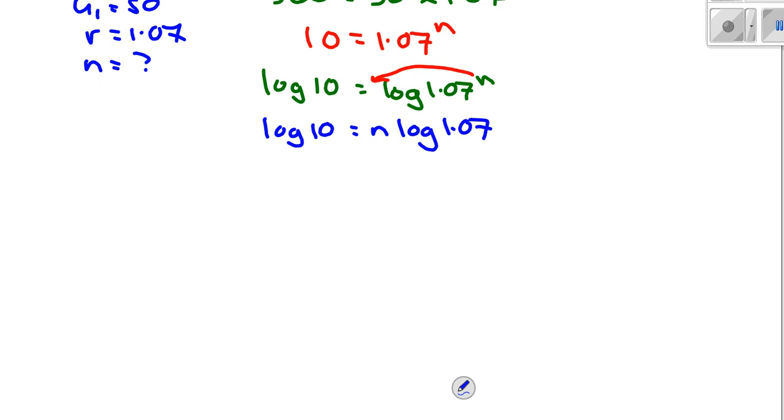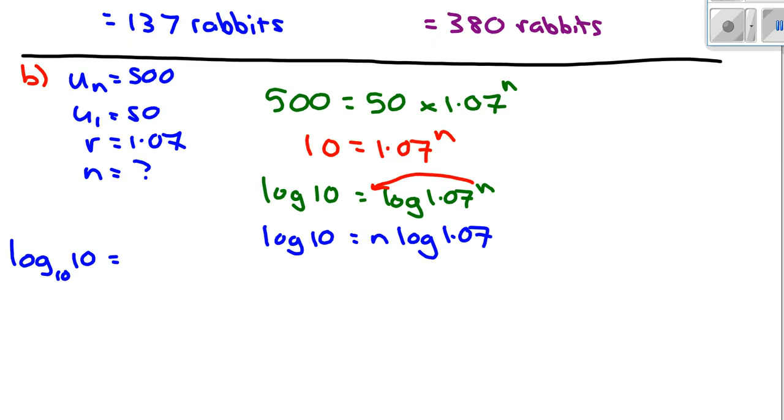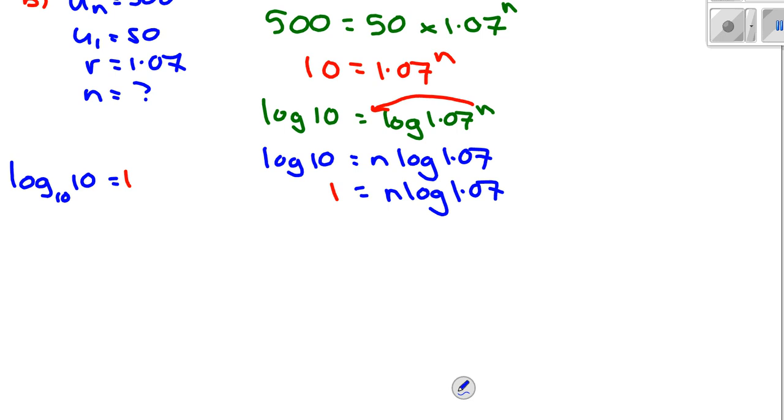So log 10 equals log 1.07 to the n. Some people like to go straight to doing this, you're welcome to do that. You can go straight to log 10 equals n log 1.07. What is log 10? 1, yeah, log 10 is 1, isn't it? Because the regular base of the log is 10. Then 10 to the power of what equals 10? It's 1. So log 10 equals 1, we can replace this with 1 equals n log 1.07. And then to solve for n, divide by log 1.07. Brilliant, yep, 1 over log 1.07 equals n.